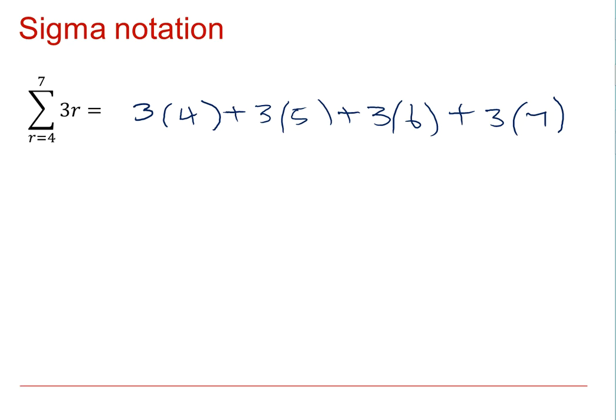Alternatively, we could have rewritten this as being equal to taking the 3 out, the sum between R is 4 and 7, of R. So we can take the scalar multiple out.